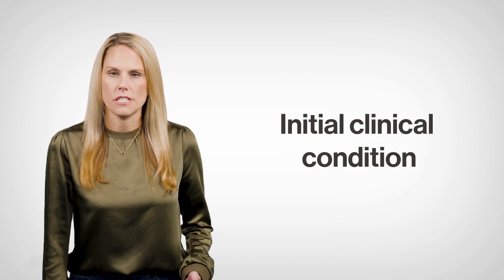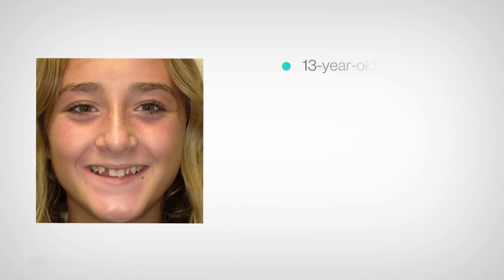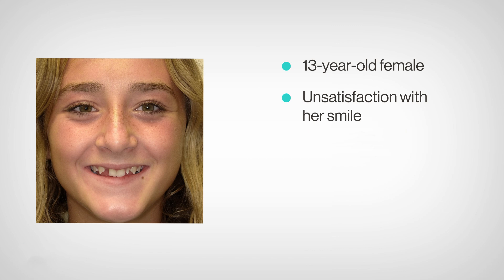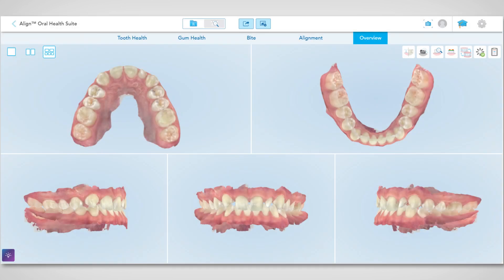So in this case, a 13-year-old female presents to the office with the chief concern of a missing right lateral and an undersized left lateral. After a scan and analysis of the case, we determined quickly that this would not be a restorative only case, that we would need to consider orthodontic movement first to idealize tooth position and function to allow us for a restorative outcome.